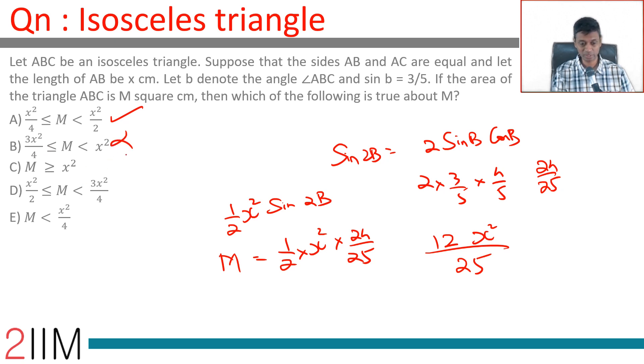This is wrong. Greater than or equal to X square, that is wrong. Between X square by 2 and 3 X square by 4, that is wrong. Less than X square by 4, that is wrong. This is the answer you are looking for.